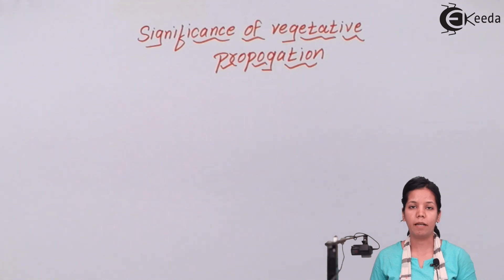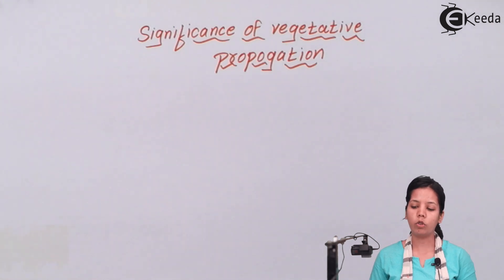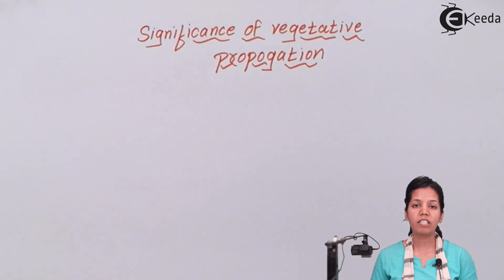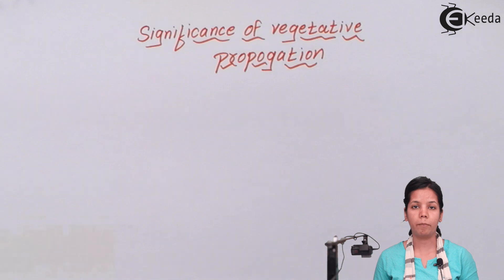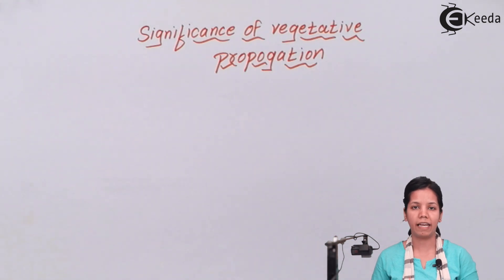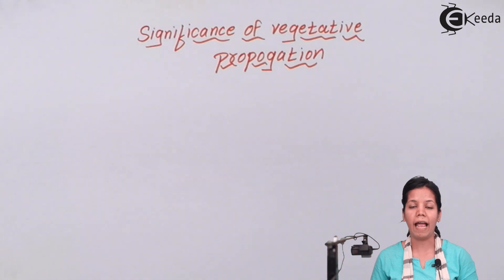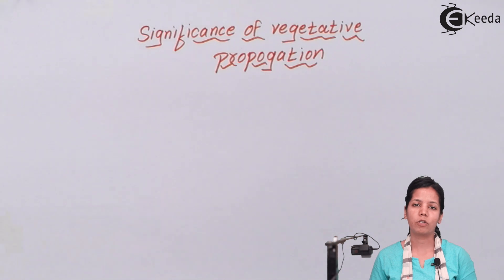Secondly, vegetative propagation helps in those plants which have become dormant or in those plants which have poor viability — plants which are not able to grow or produce a radicle. Even to produce grafting, during the grafting process when you mix two different plants with two different characteristics, it is a form of vegetative propagation, and the technique of budding is also a form of vegetative propagation.